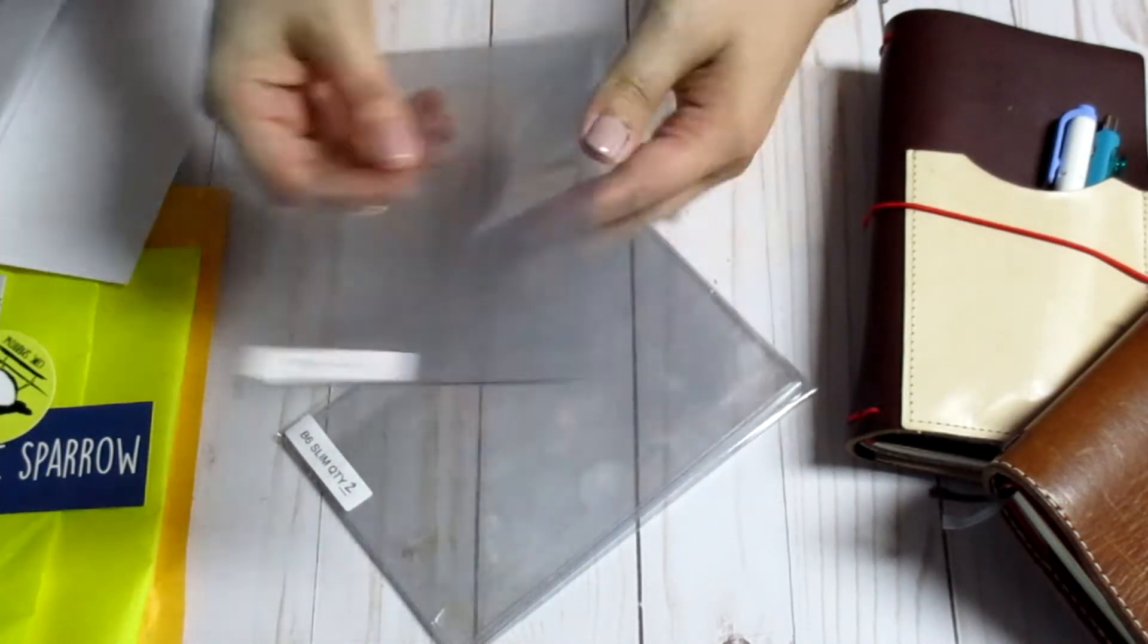So let's go ahead and crack into this. I did get two for the B6 slim because you never have enough. So these are really good quality thick plastic. It's one slip pocket on the back there and of course their logo here on the front.